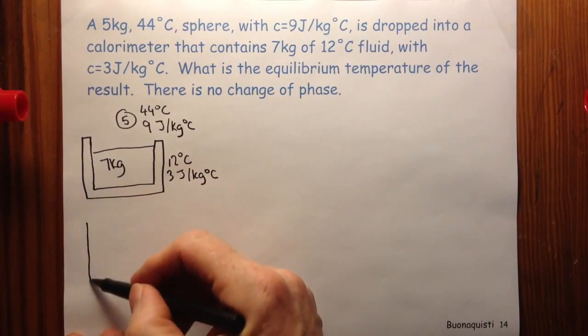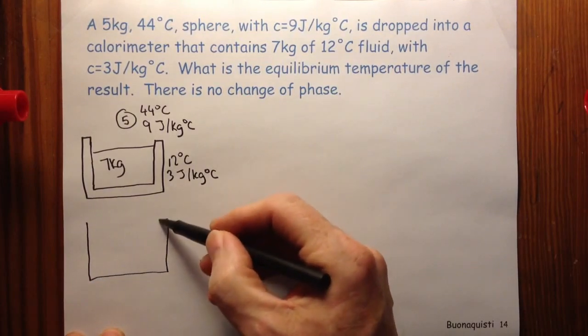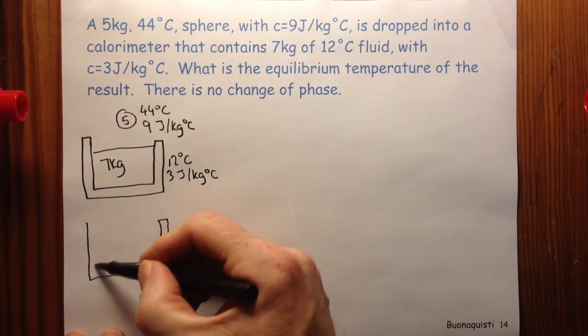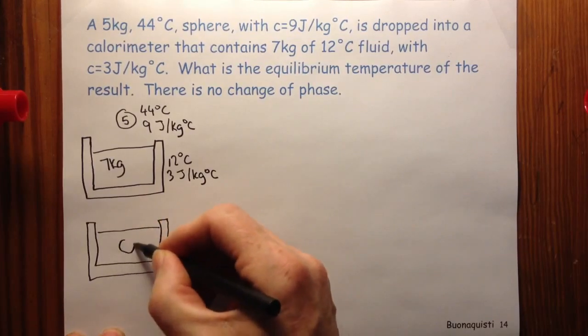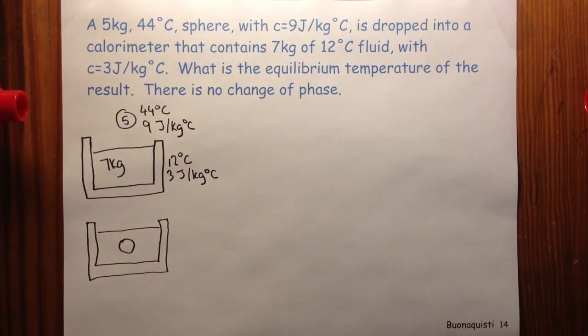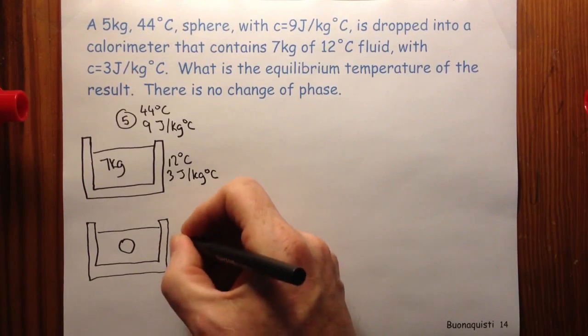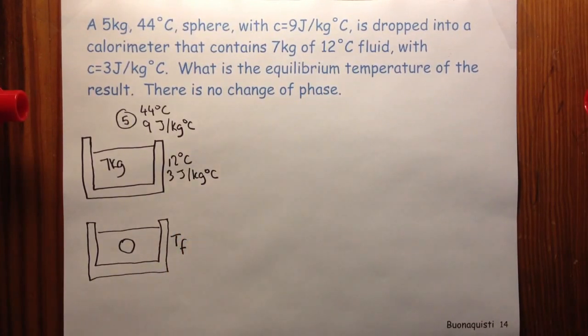And what happens of course is that the two of them are in thermal contact and they exchange energy until they are in thermal equilibrium. And at thermal equilibrium they have the same temperature, T final, and that's what we want to find. There's no change in phase so I don't need to worry about latent heats.